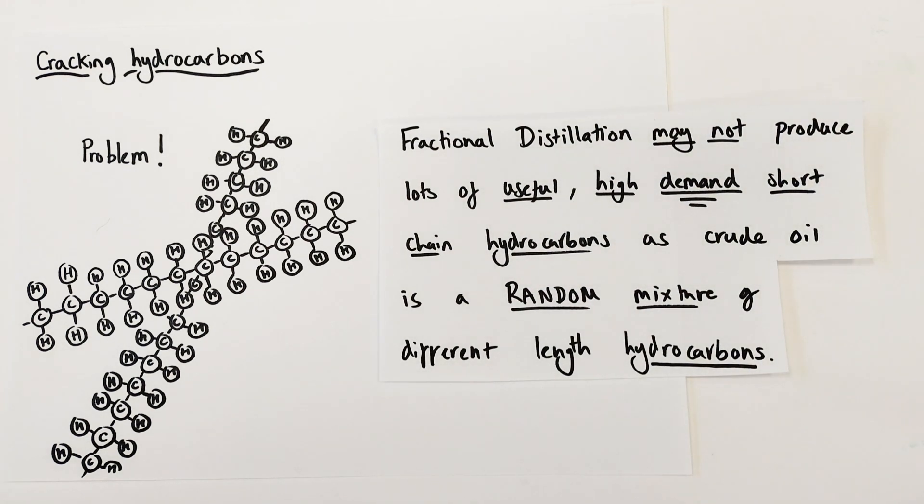Fractional distillation may not produce lots of useful high demand short chain hydrocarbons as crude oil in reality is just a random mixture of different length hydrocarbons. We have no guarantee we're going to have a large proportion of those short chain hydrocarbons we need which are very useful to us and in high economic demand.